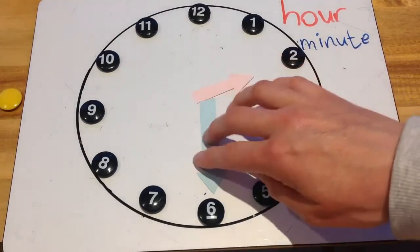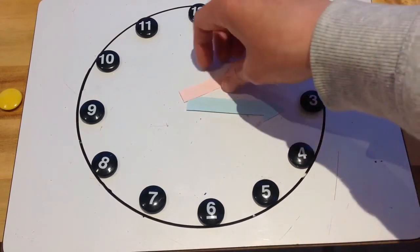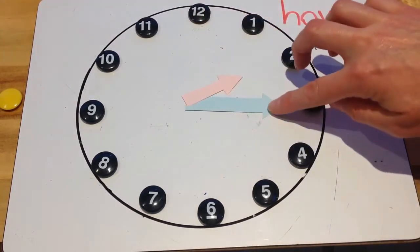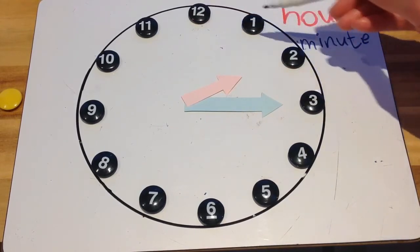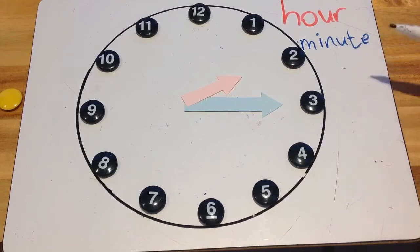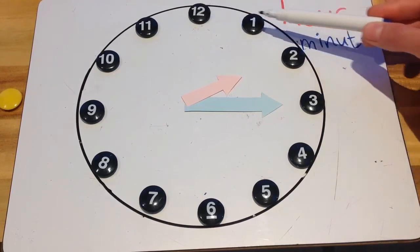Now, another thing we can learn about is when the minute hand is pointing to the 3. So it's gone from the 12 to the 3. That's a quarter way around the clock. A quarter way. So a quarter way means quarter past.